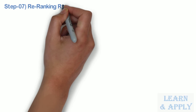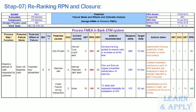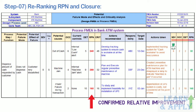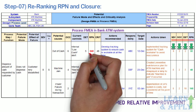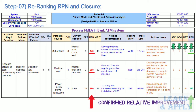Step 7: Re-ranking RPN and Closure. After successful confirmation of risk mitigation actions, the core team will re-rank the appropriate values for severity, occurrence, and detection. The new rankings are multiplied to obtain the new RPN. The original RPN is then compared to the revised RPN to confirm relative improvement to the design or process. Columns completed in Step 7 are: reranked severity, reranked occurrence, reranked detection, reranked RPN, and comparison of initial RPN and revised RPN, with new actions generated as needed. In our ATM example, after taking actions, the initial RPN reduced from 240 and 288 to 32 and 48 respectively, indicating relative improvement.